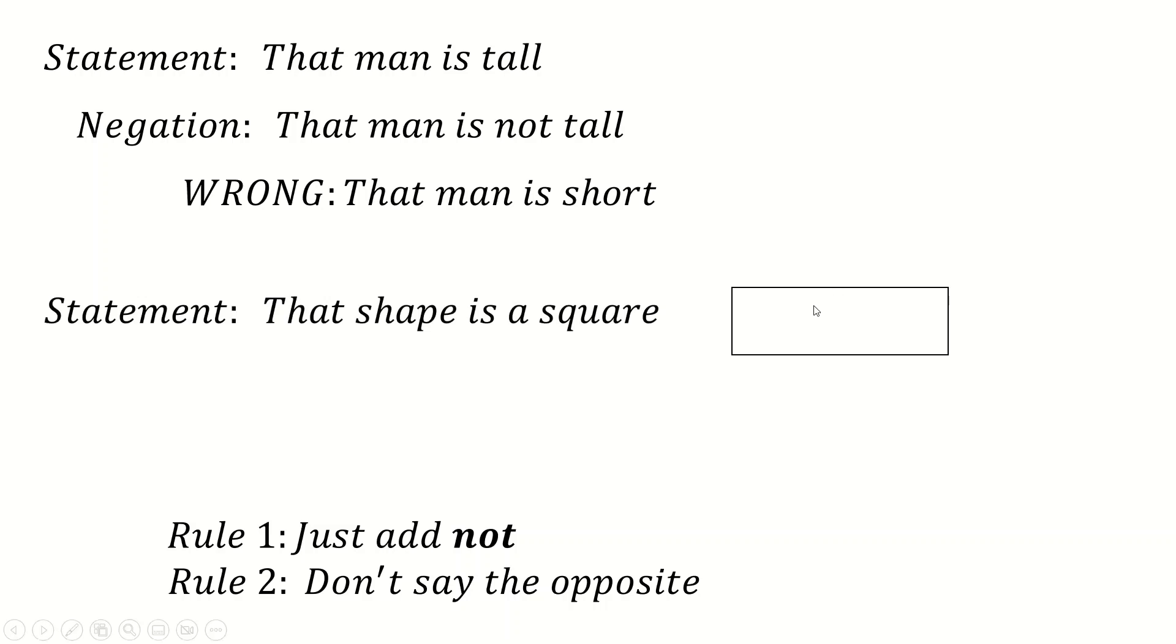So here, for instance, that shape is a square. You don't say that shape is a rectangle. You simply say that shape is not a square.